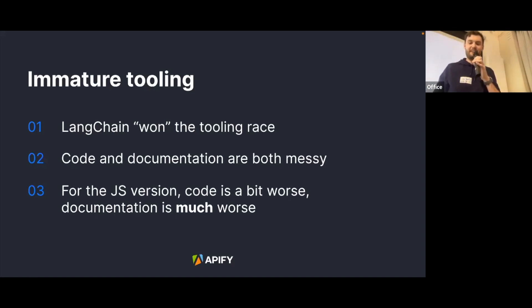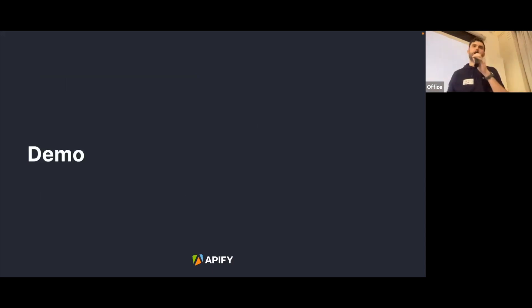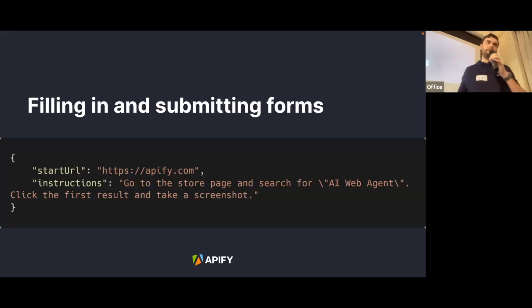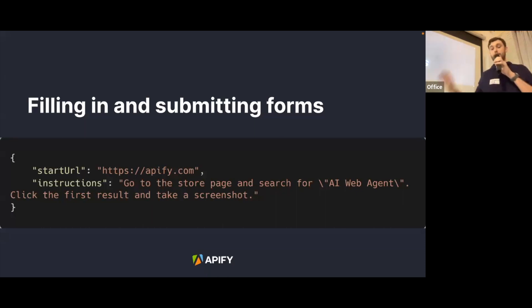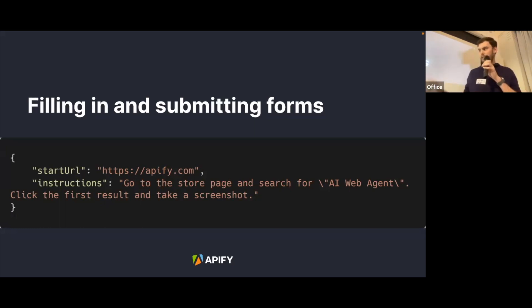Let's get to the fun part: the demo. I prepared two examples. The first: we're going to go to Apify, then to the store page, search for the AI web agent, click the first result, and take a screenshot. Notice that we're not telling the agent to fill in the form and submit it — we just say 'search.' This is important, because a non-technical user wouldn't write 'fill in the form and submit.'